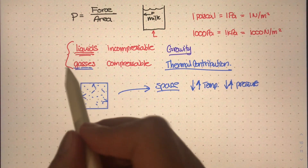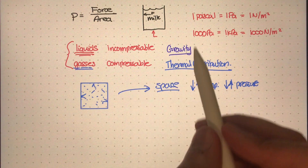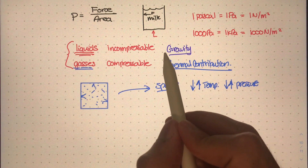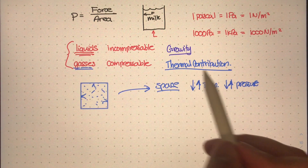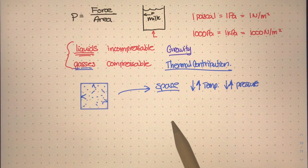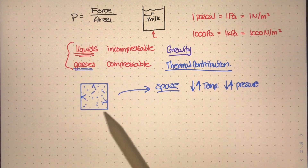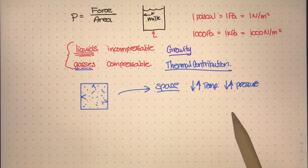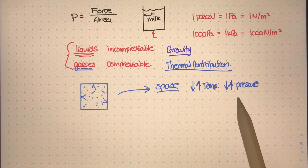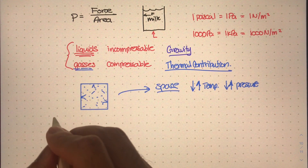Now we know that for liquids and gases — or just fluids in general — there are two big factors that really cause the pressures we're studying: one is gravity, and the other one is thermal contribution. They both affect liquids and gases in different ways, and we can use this knowledge to go forth in fluid mechanics and get into more advanced topics. But there is one special topic I really want to talk about, and that is atmospheric pressure.